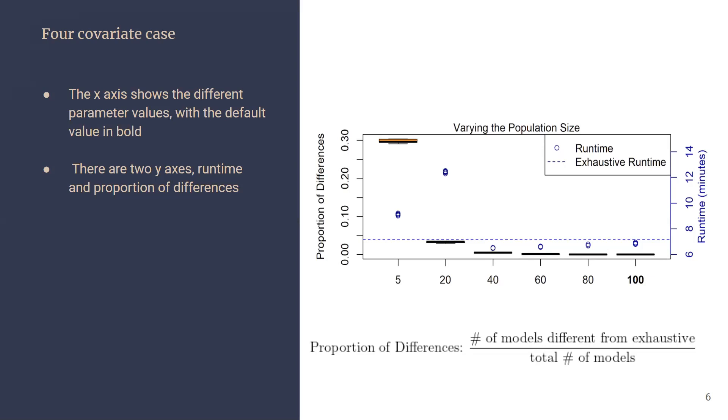The proportion of differences is the number of models different from the exhaustive method over the total number of models. Our goal in this study is to choose the value that both minimizes the runtime and the proportion of differences. For the population size, we chose an optimal value of 40.